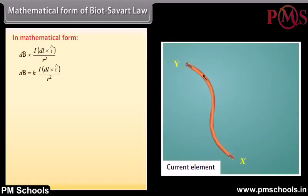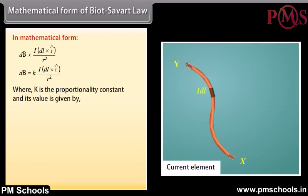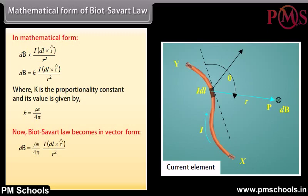In mathematical form, Biot-Savart law is: dB = K · I(dL × R̂) / R², where K = μ₀ / 4π. In vector form: dB = (μ₀/4π) · I(dL × R̂) / R². In magnitude form: dB = (μ₀/4π) · I·dL·sinθ / R².